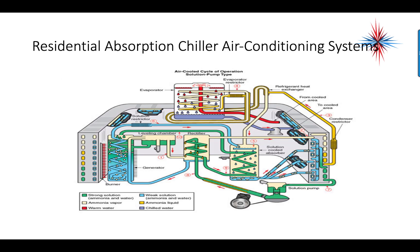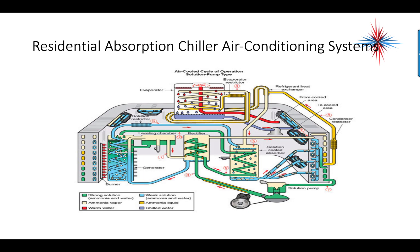This is an example of a residential chiller air conditioning system. Pay attention to the numbers in the red circles — we're going to start with number one. The generator has a gas burner that heats the mixture of ammonia and water. The boiling point of the ammonia is lower than the water, and therefore the ammonia evaporates and flows through the line marked one on the diagram.